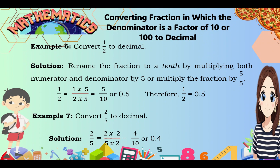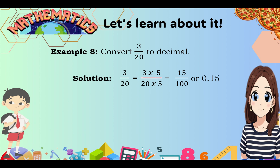Example number 7: Convert 2 fifths to decimal. Multiply 2 fifths by 2 over 2 to make it a fraction with a power of 10. So 2 times 2 equals 4, and 5 times 2 equals 10, giving us 4 over 10, or 0.4. Example number 8: Convert 3 over 20 to decimal. Multiply by 5 over 5: 3 times 5 equals 15, and 20 times 5 equals 100, giving us 15 over 100, or 0.15.